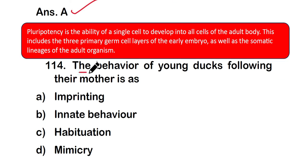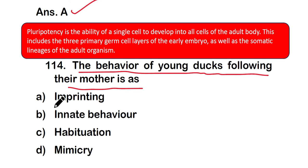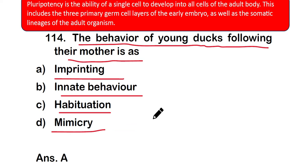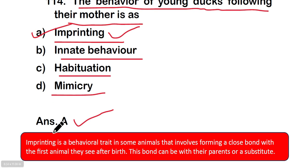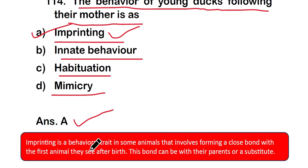Question 114: The behavior of young ducks following their mother is an example of: (a) imprinting, (b) innate behavior, (c) habituation, or (d) mimicry. The correct answer is option A — imprinting. Imprinting is a behavioral trait in some animals that involves forming a close bond with the first animal they see after birth.